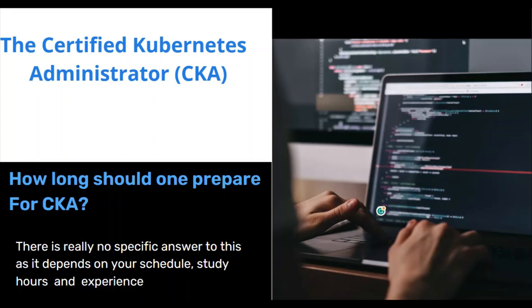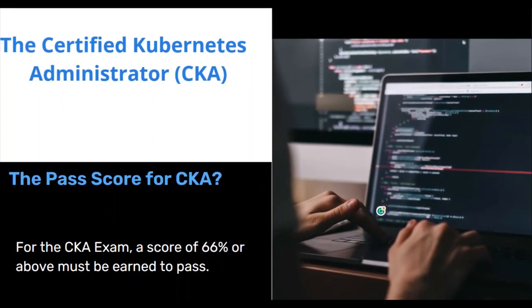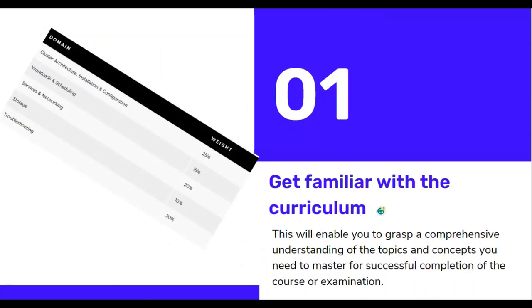What is the pass score for CKA? A score of 66 percent or above is required in order to pass. If you've written this exam and didn't score at least 66 percent, you didn't make it, so you have to sit again and score at least 66 percent or above.